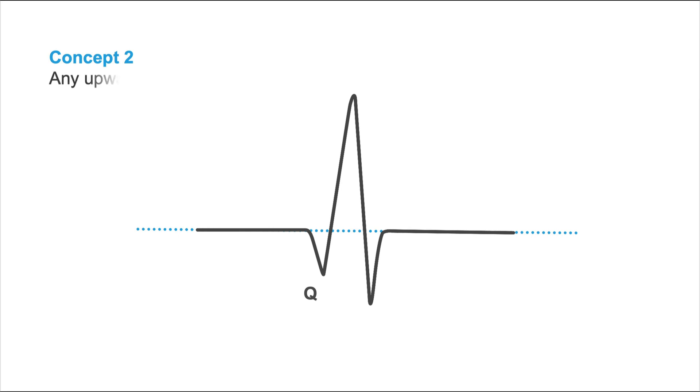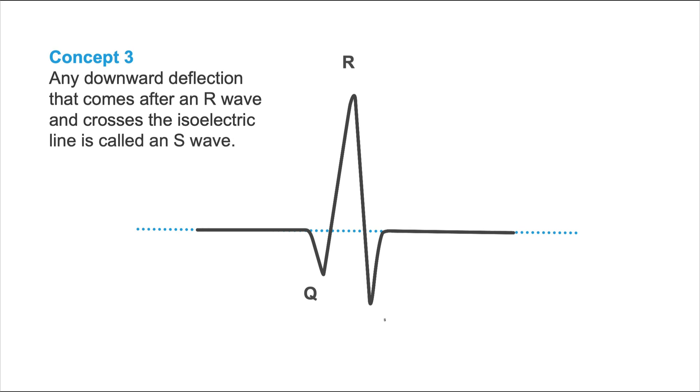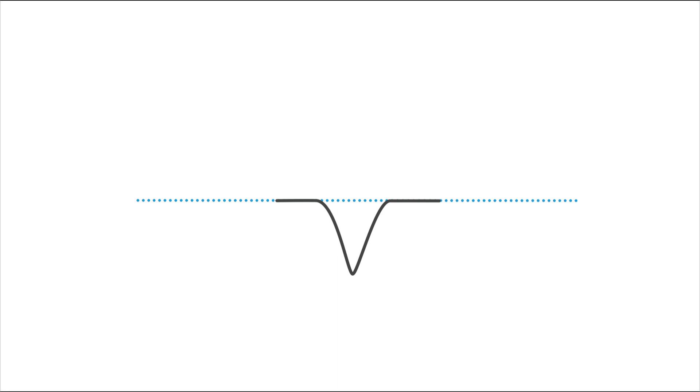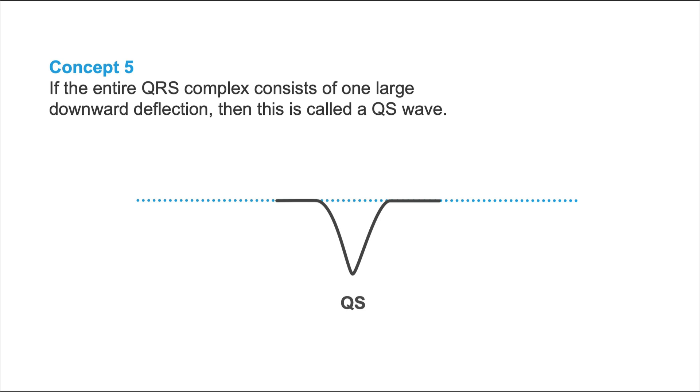Concept number two: any upward deflection is called an R-wave. Concept number three: any downward deflection that comes after an R-wave is called an S-wave. Concept number four: a second upward deflection is called R-prime. And what about this wave here? Is this a Q? Is this an S? Well, to tell you the truth, people came up with a compromise here. They said that whenever there's one large downward deflection, that's called a QS-pattern or QS-wave. So concept number five says, if the entire QRS complex consists of just one large downward deflection, then this is called a QS-wave.